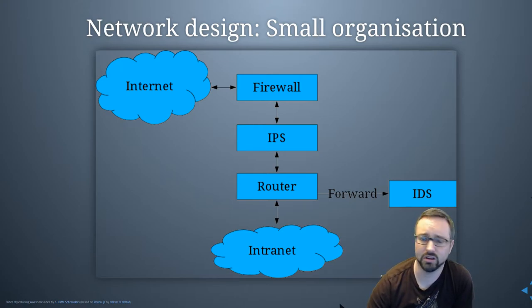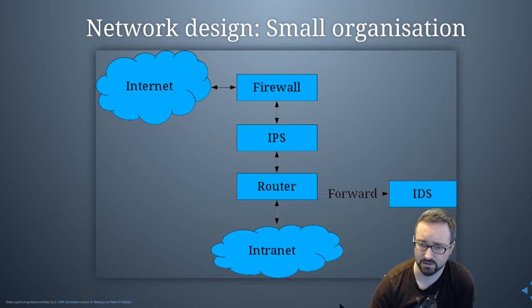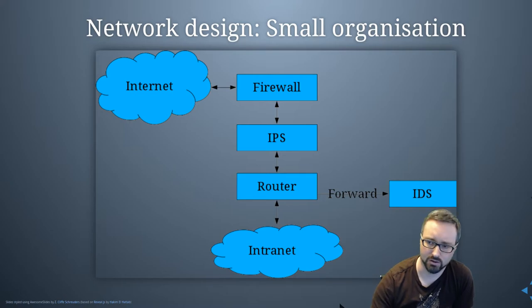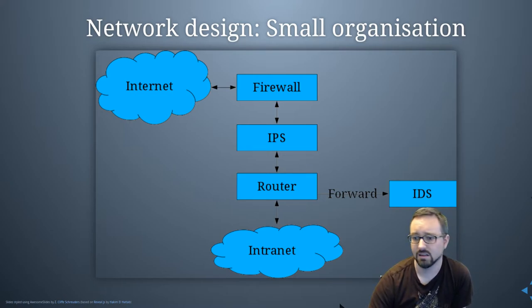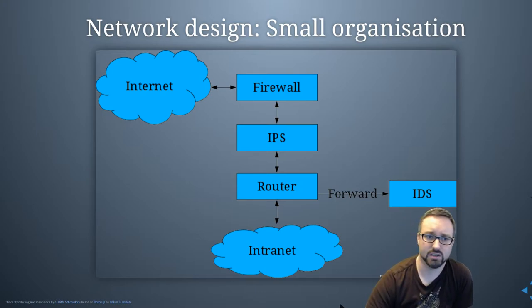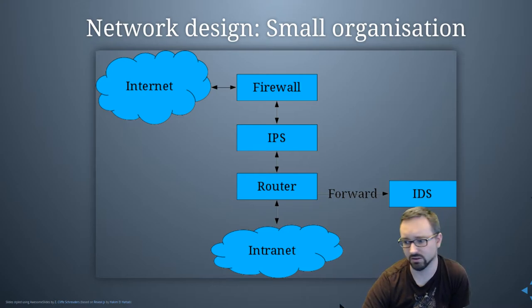If you had a small organization you might have a simplified network where you've got internet access flowing through an external firewall, a perimeter firewall, and your IPS positioned between the firewall and the router, which can forward traffic to an IDS system.